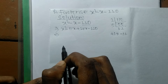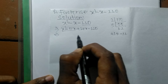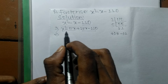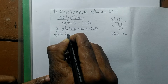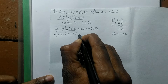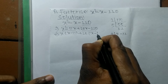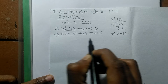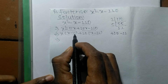Now we separate the expression into two pairs: the first pair is x squared minus 11x, and the second pair is plus 10x minus 110. In the first pair, the common factor is x, leaving x minus 11. In the second pair, the common factor is plus 10, also leaving x minus 11.